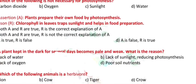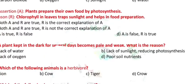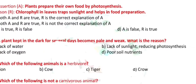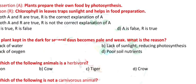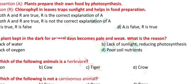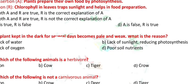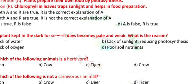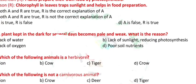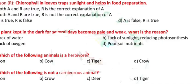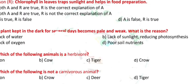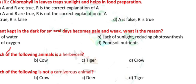Question 3: Assertion A - Plants prepare their own food by photosynthesis. Reason R - Chlorophyll in leaves traps sunlight and helps in food preparation. a) Both A and R are true, R is the correct explanation of A. b) Both A and R are true, R is not the correct explanation of A. c) A is true, R is false. d) A is false, R is true.